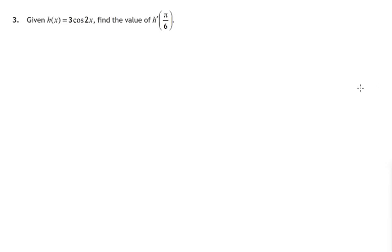Hi, Mr Corsi here. In this question we're given a function h(x) = 3cos(2x), and we're asked to differentiate it, that's what h dashed means, and then replace x by π/6.